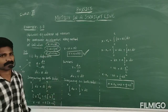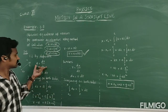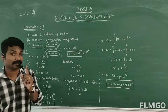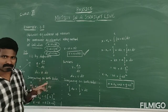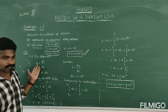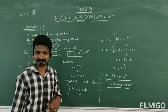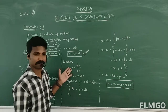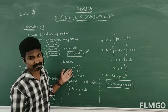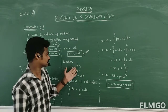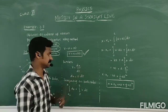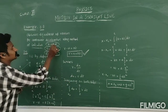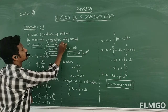So the first equation is now derived: V equals U plus AT, using the acceleration definition. Next, we will derive another equation. By using the velocity definition — the change in displacement with respect to time — velocity equals DX divided by DT.